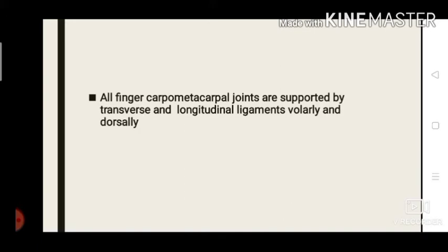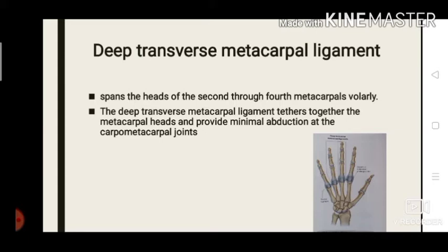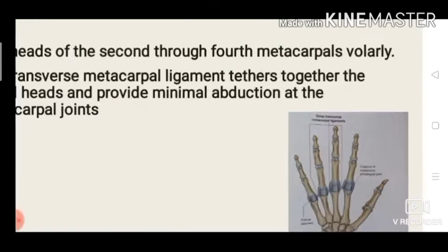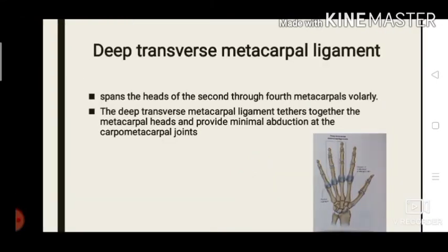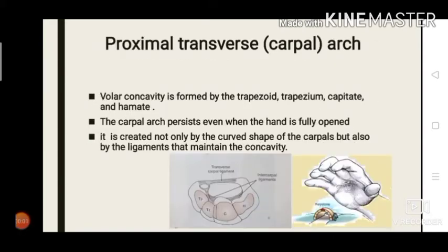All finger carpometacarpal joints are supported by transverse and longitudinal ligaments, both volarly and dorsally. The deep transverse metacarpal ligament spans the heads of the second through fourth metacarpals volarly. This deep transverse metacarpal ligament tethers the metacarpal heads, provides minimum abduction at the carpometacarpal joint, and prevents the separation of metacarpal heads.